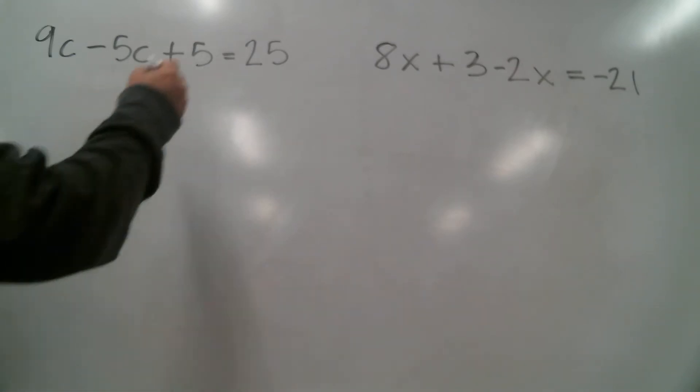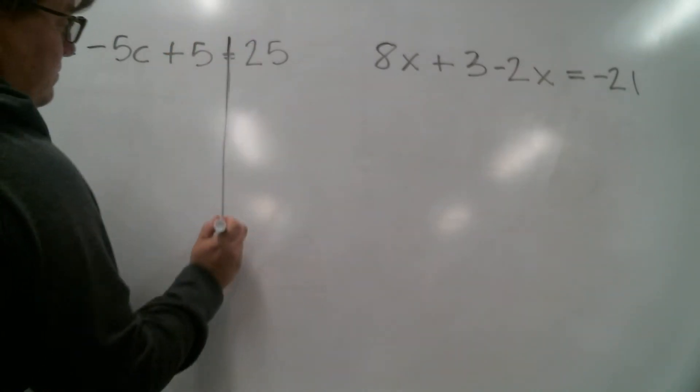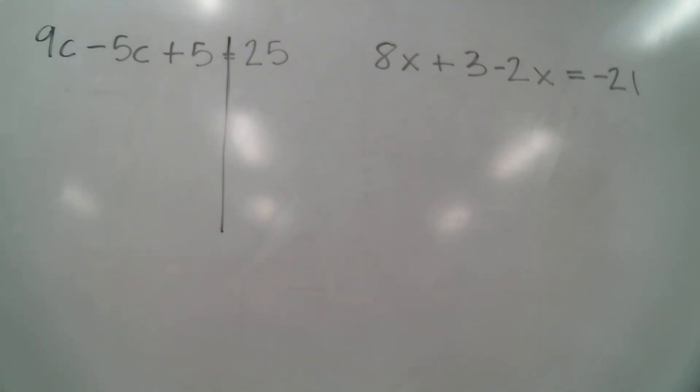Okay, so if you copy these two problems down and let's look at this first one. If you see here it says 9c minus 5c plus B equals 25. So there's something that we have to take care of before we can solve it. When you have like terms that are together on one side, you have to combine them. It's called combining like terms. I know you've heard that before.